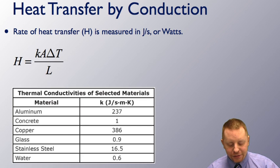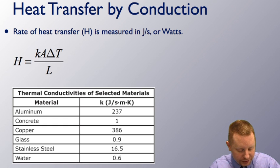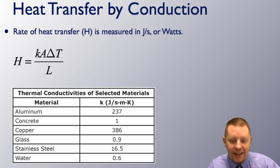Now heat transfer by conduction we can model by looking at the rate of heat transfer, capital H, which is measured in joules per second, which of course as you know is a watt. So the rate of heat transfer is equal to this constant, the thermal conductivity of some material K, times A, the cross-sectional area, times the change in temperature or the temperature gradient across the object divided by the length of the object.